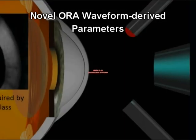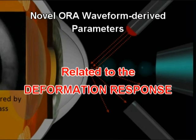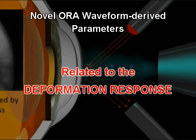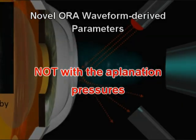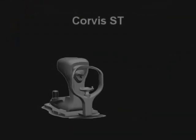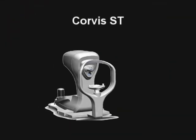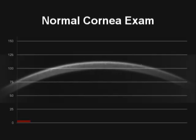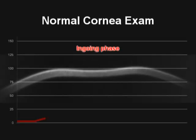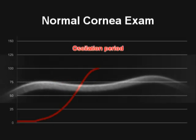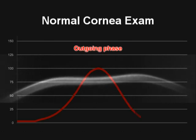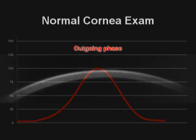Such parameters are related to the deformation response of the cornea, not with the applanation pressures as in CH and CRF. The Oculus Corvis ST is a new system that combines an ultra-high-speed Scheimpflug camera to image an 8mm horizontal meridian throughout corneal deformation during non-contact tonometry.